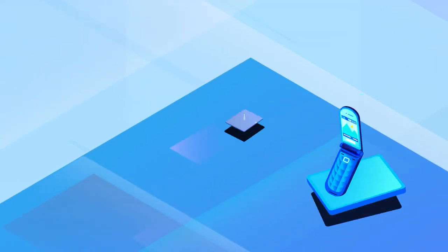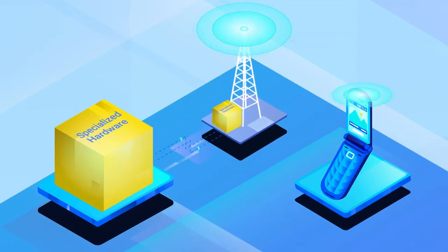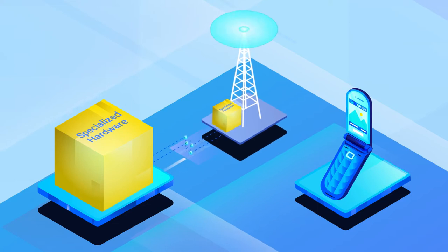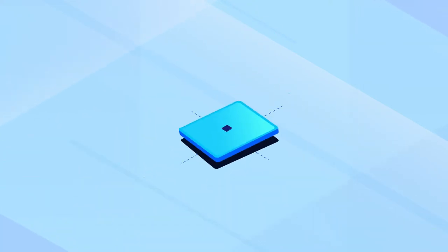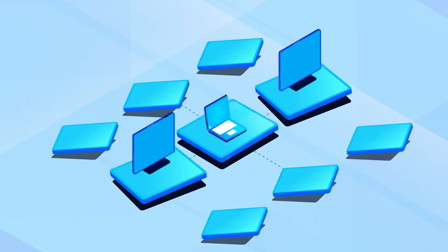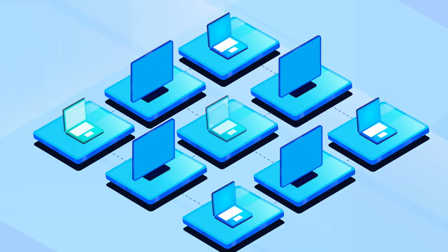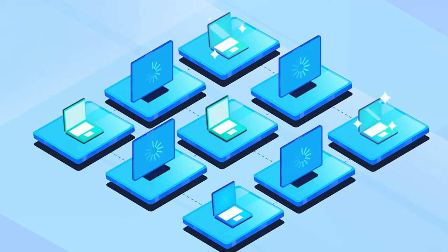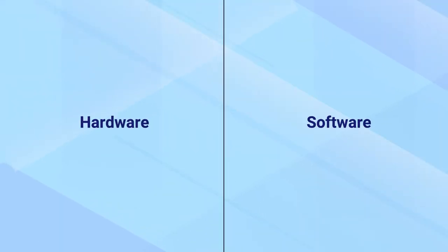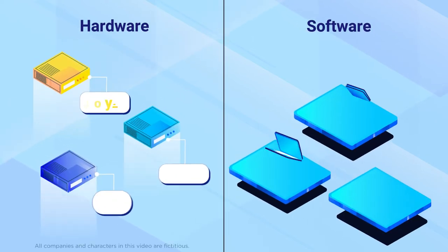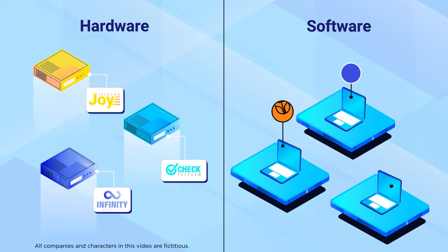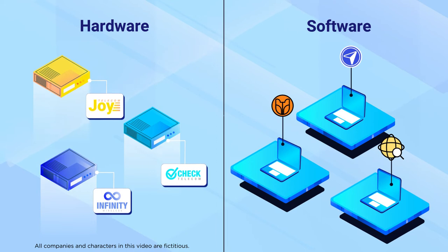Originally, cellular networks relied on specialized hardware. Open 5G networks move most functionality to software that runs on white box hardware — commercial off-the-shelf computers that can be easily upgraded or replaced. There are two main benefits of separating the hardware and software. First, it allows more competition in building the hardware and software, which drives down costs.